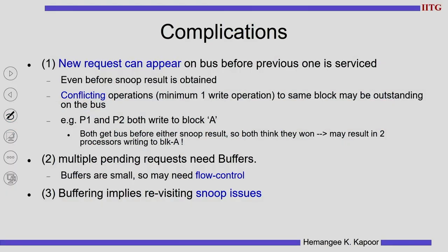The first is conflicting transactions or conflicting requests. A conflicting operation is defined as an operation on the same block out of which at least one is a write — I can have two write operations or one read and one write. Whenever such operations exist with one being a write, we say these operations conflict on the same block. If P1 and P2 both want to write to block A, P1 will send a write request for block A onto the bus.